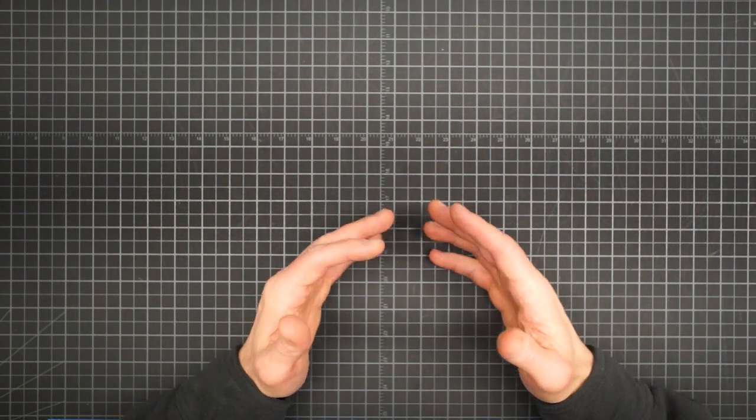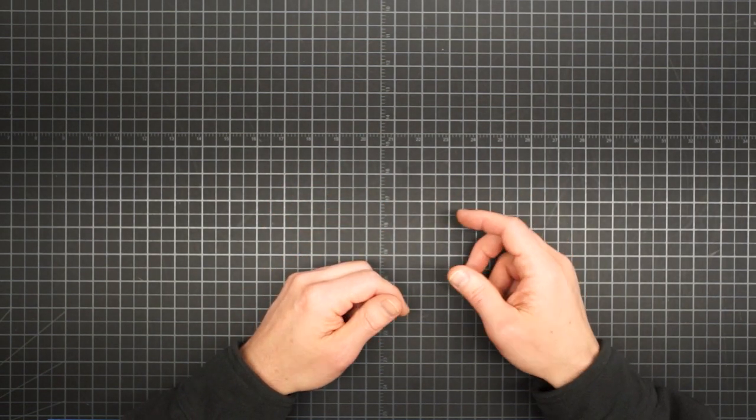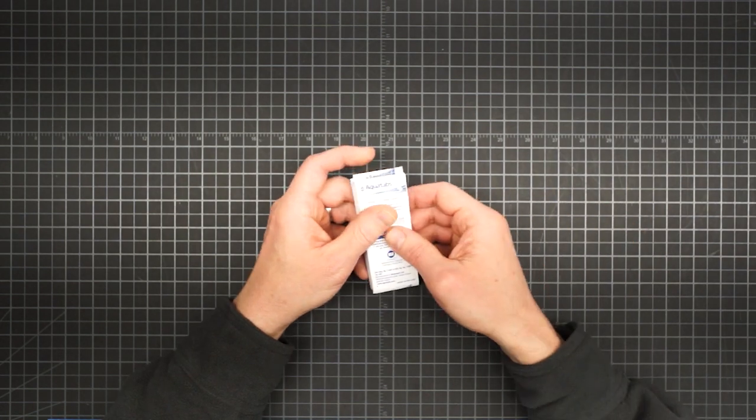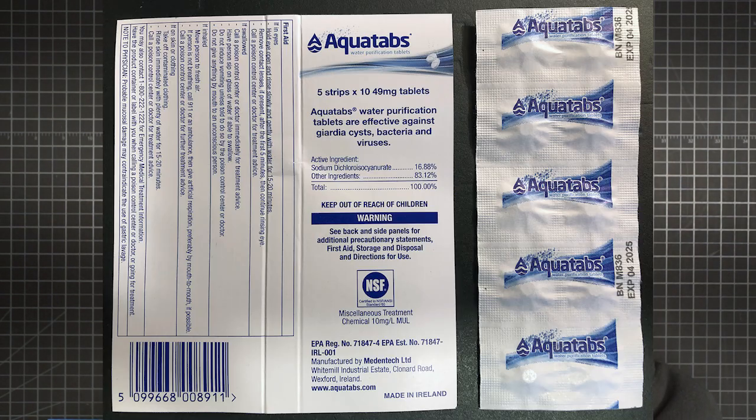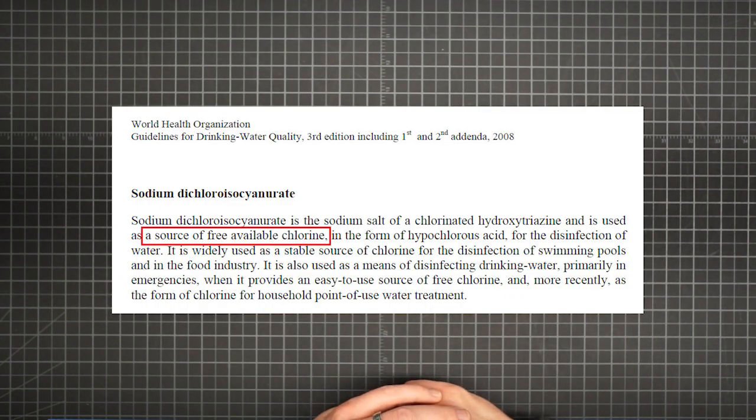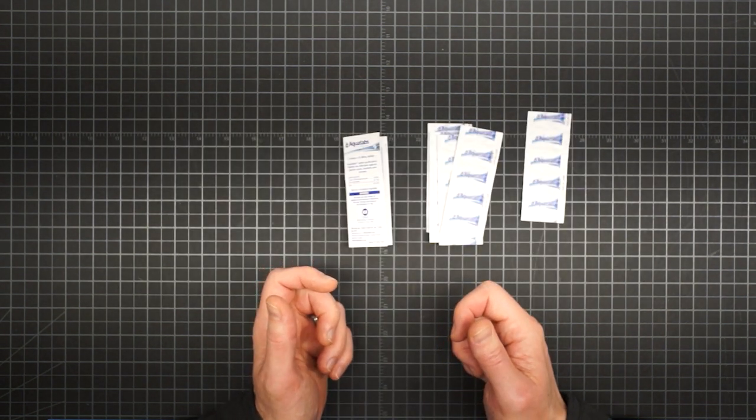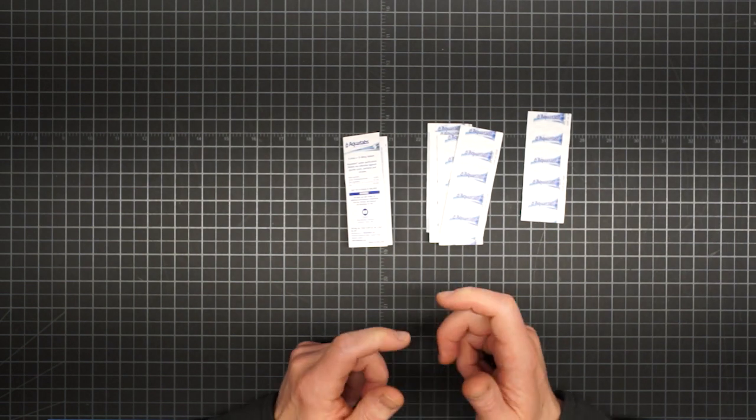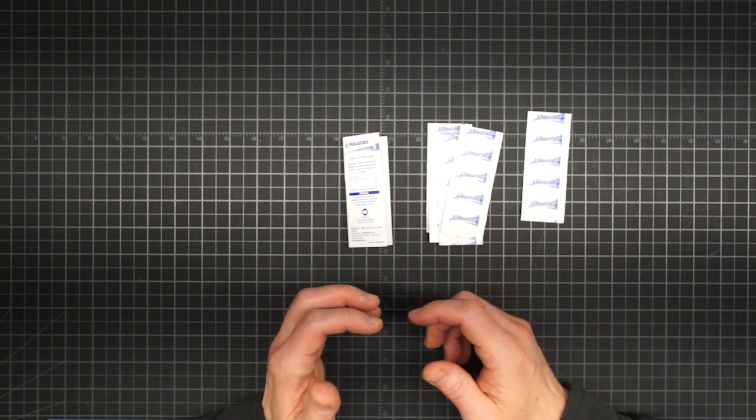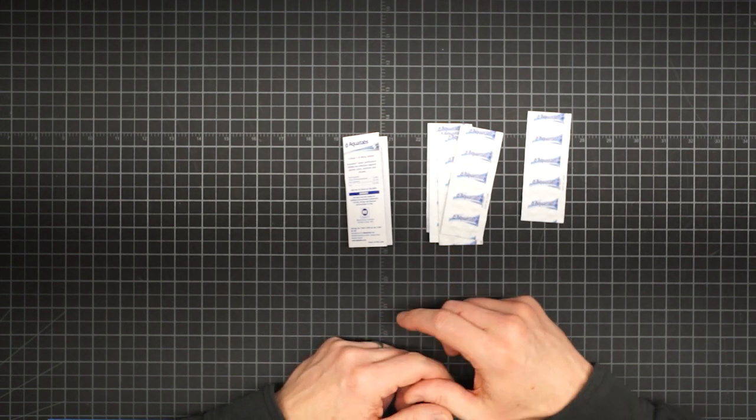The liquid bleach options we've been talking about aren't the only way to chlorinate your water. Now AquaTabs have been around for decades, and they've been used by millions of people all over the planet. The active ingredient may look novel, but don't be fooled. Sodium dichloroisocyanurate is used as a source of free available chlorine in the form of hypochlorous acid, just like the sodium hypochlorite in laundry bleach or the calcium hypochlorite in pool shock. As such, it will share some of the drawbacks of chlorination, namely the risk of byproducts and an inability to adequately treat cryptosporidium. However, there are some distinct advantages to these tablets.